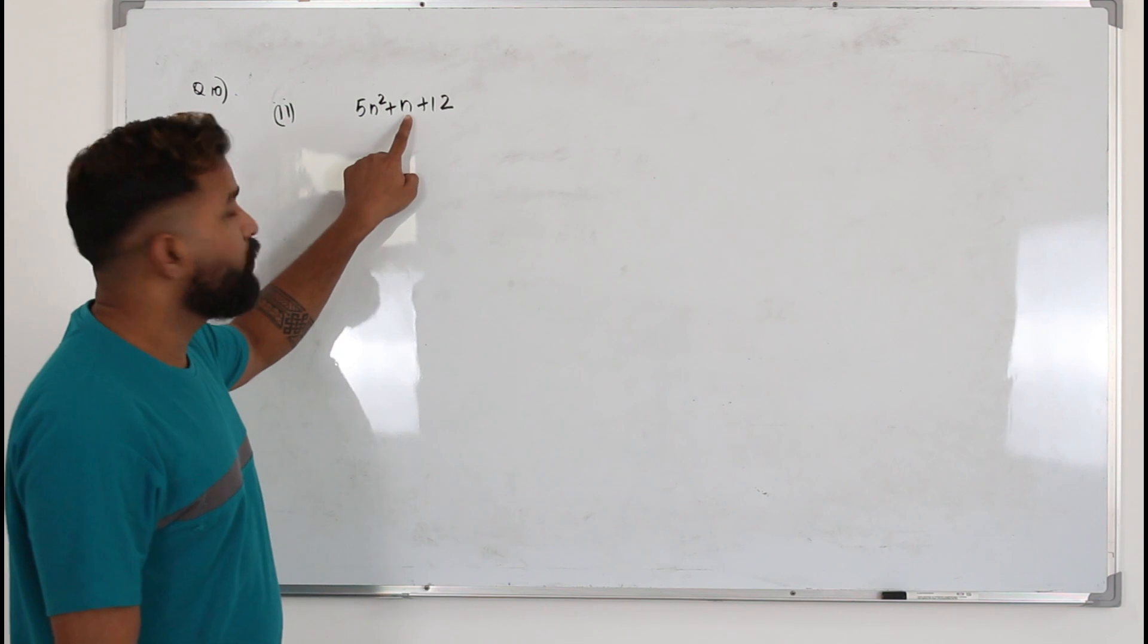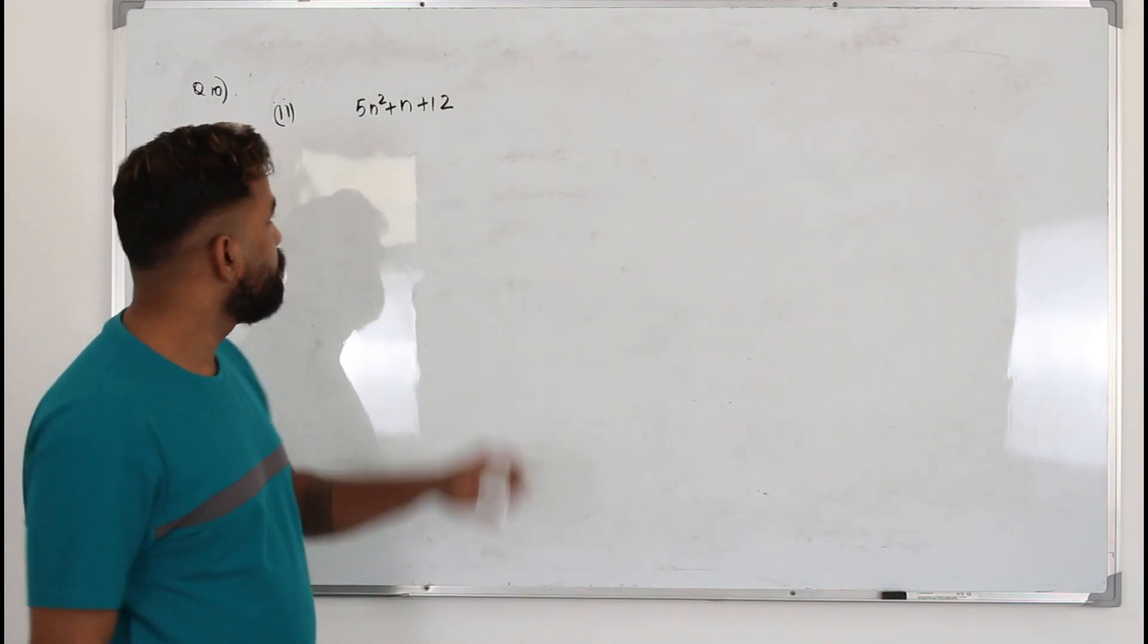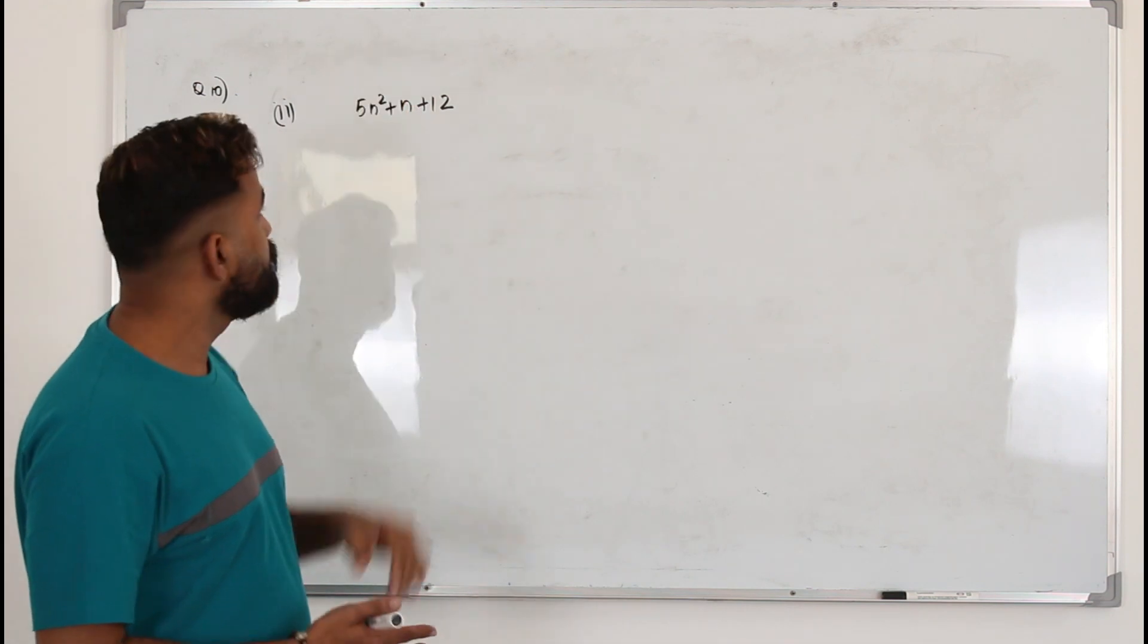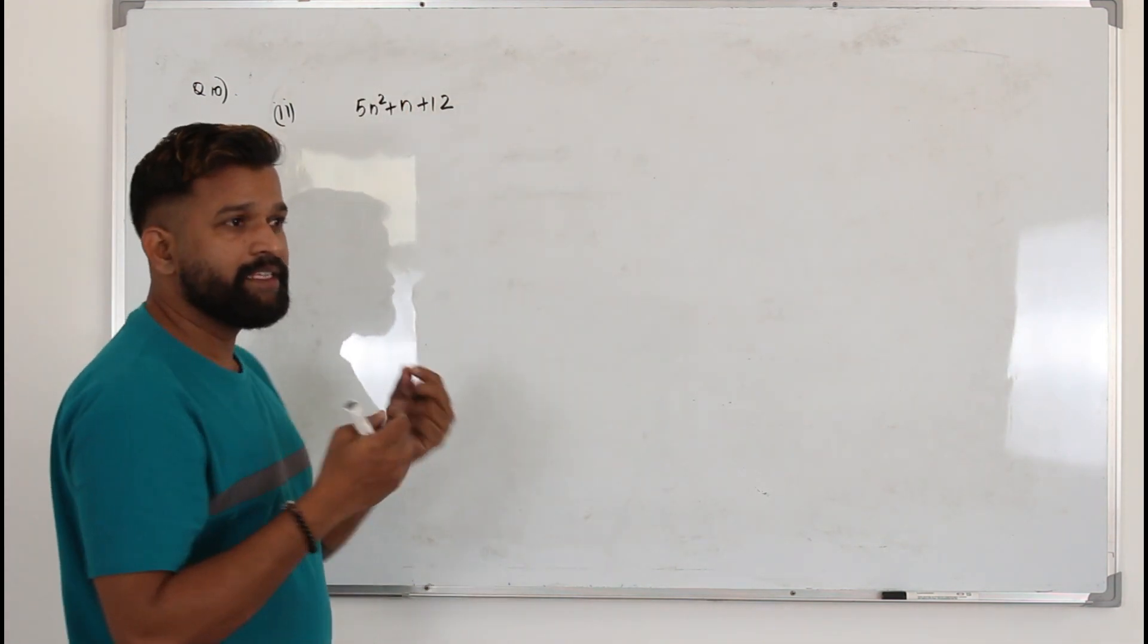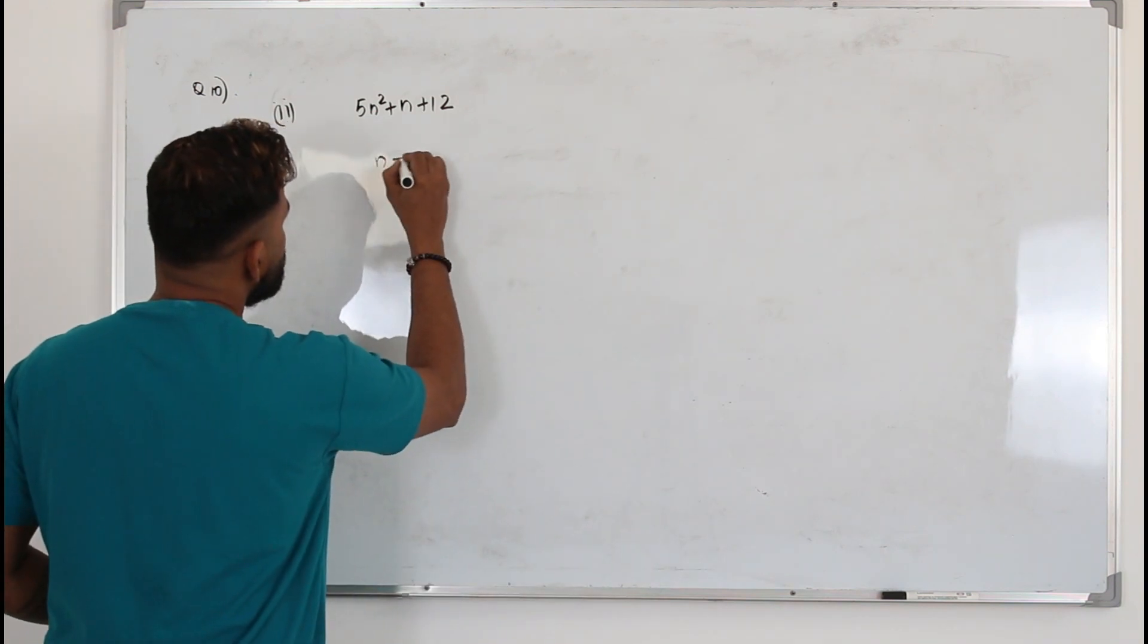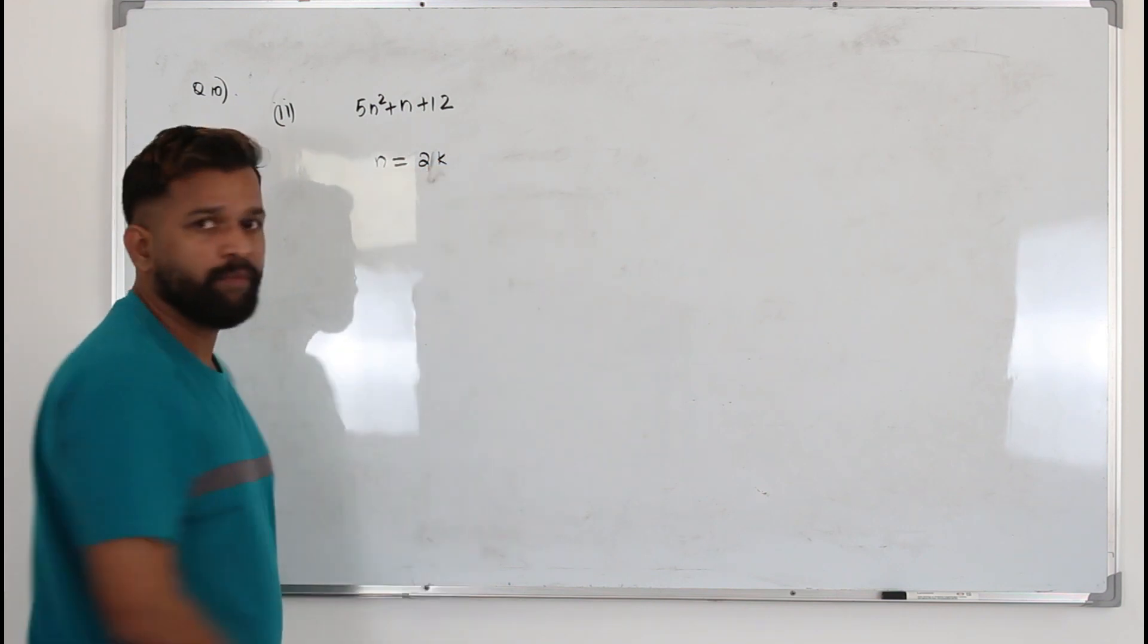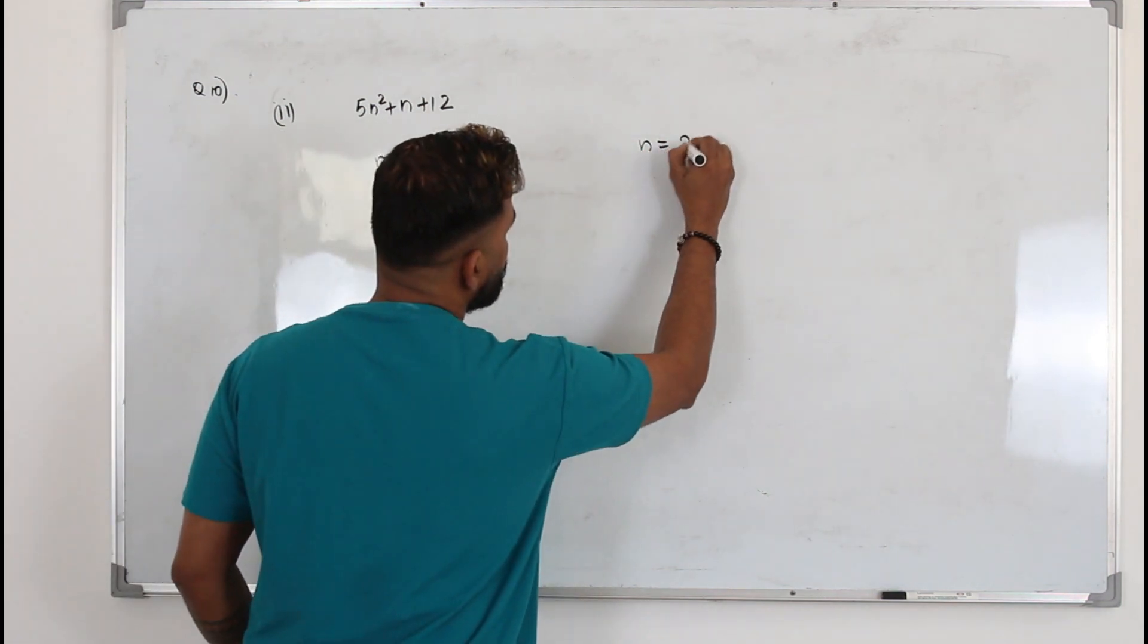Here they say if n is an integer, it can be positive or negative. This expression is always even. That's what they want you to prove. So we need to take two cases. When they say n is an integer, it can be an even integer. So the expression for even integer we take it as 2k, and it can be odd also, 2k plus 1.